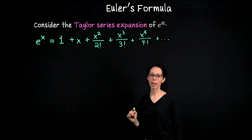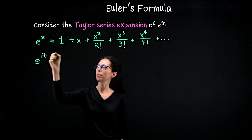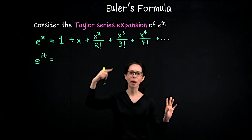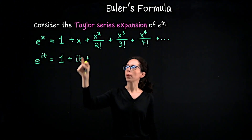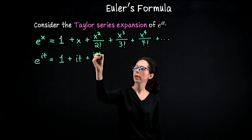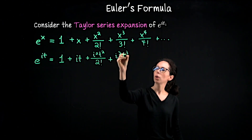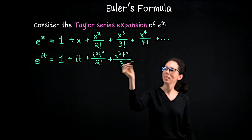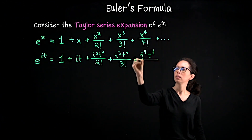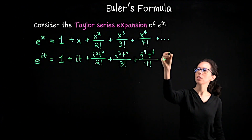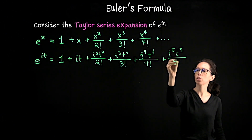Now everywhere I have x, let me plug in i times t. On the left we'll have e to the it, and on the right we'll plug in first and then look at the powers of i. So we write 1 plus it plus i squared t squared over 2 factorial, plus i cubed t cubed over 3 factorial, plus i to the 4th t to the 4th, and I'm going to write a few more terms — the 5th and 6th — because we're going to group these into two groups.